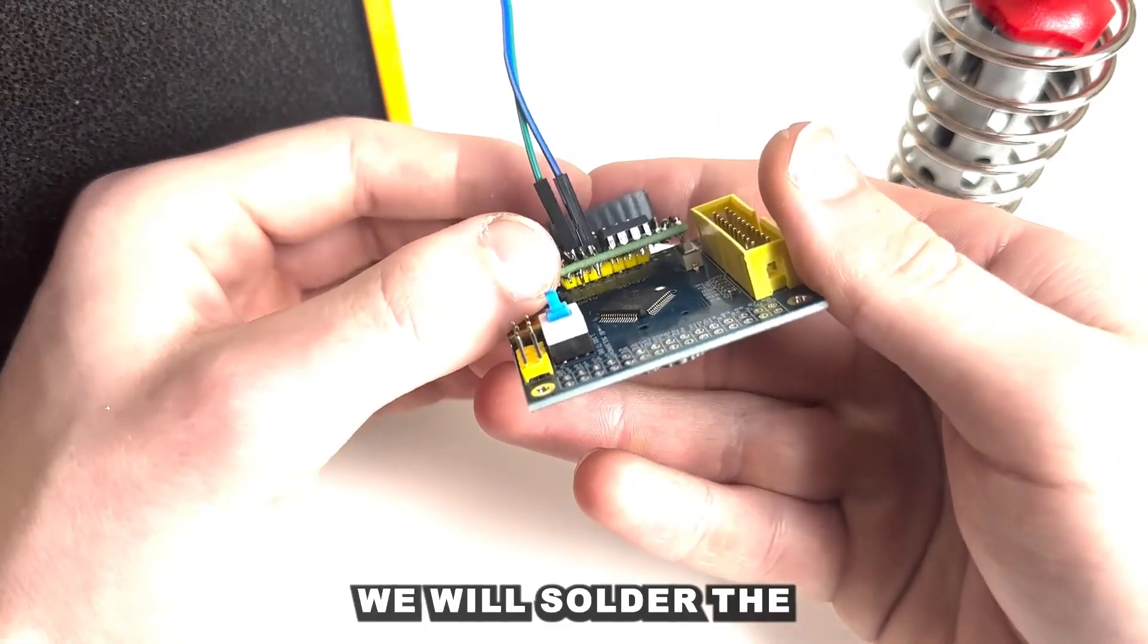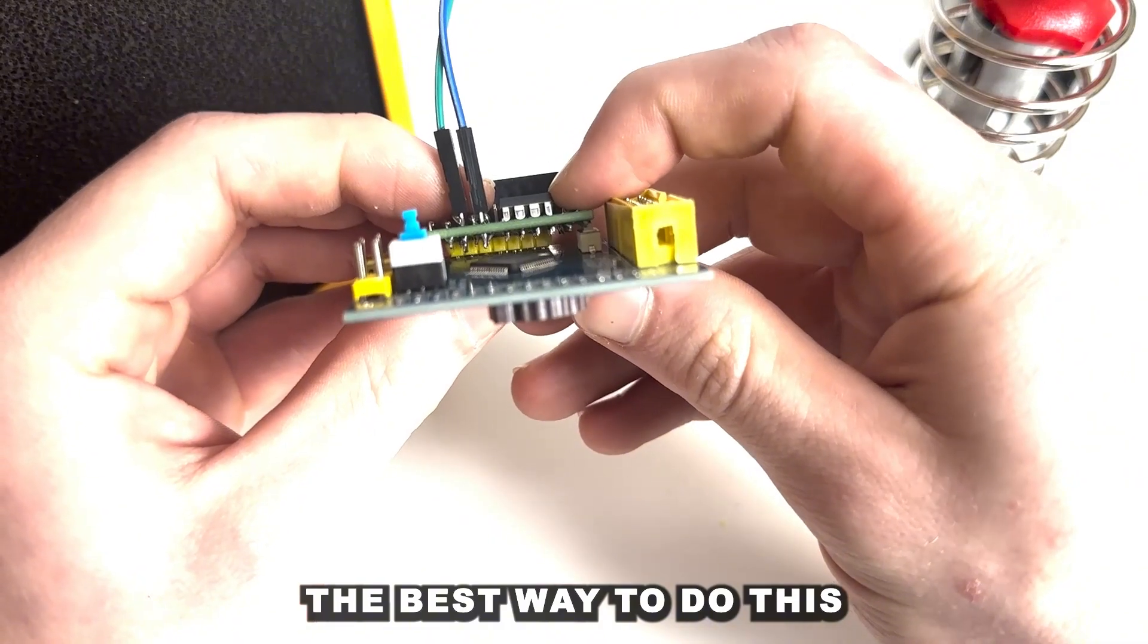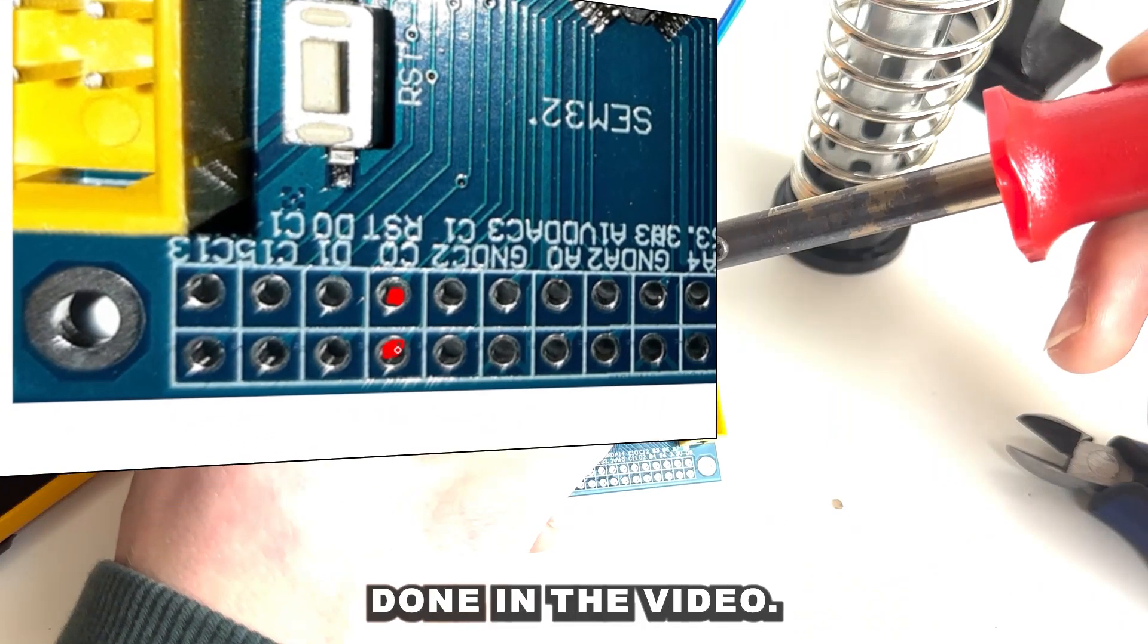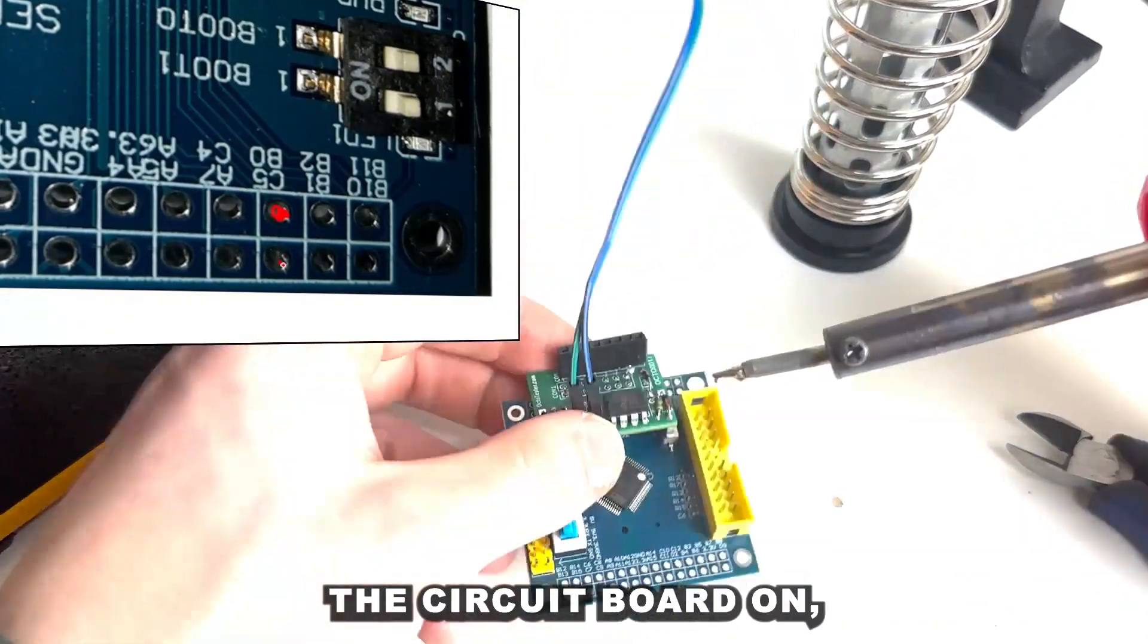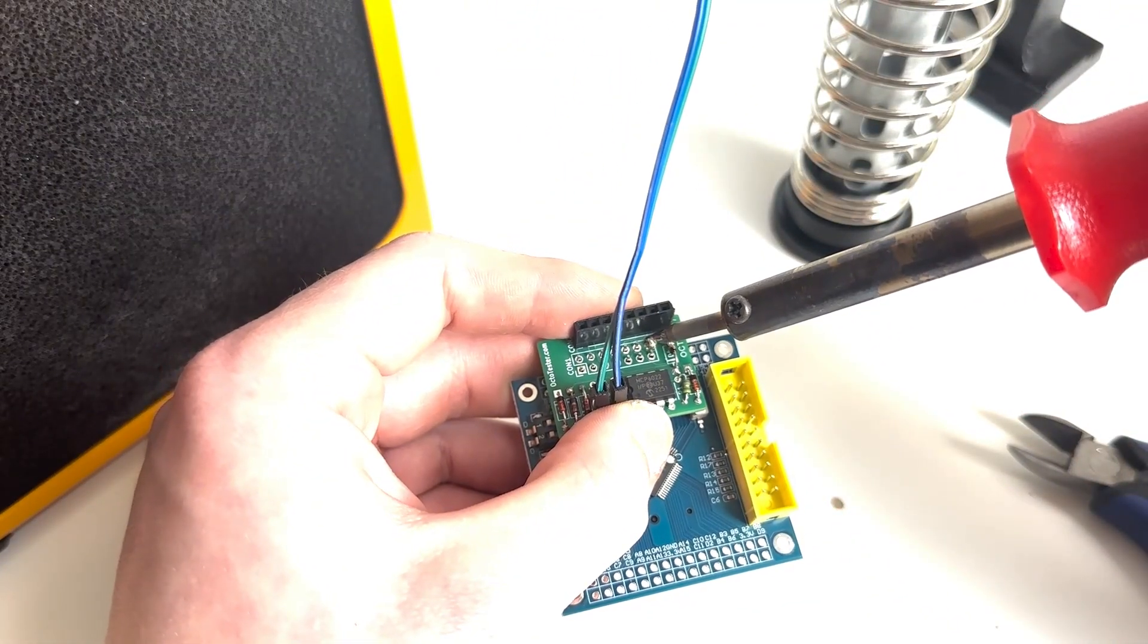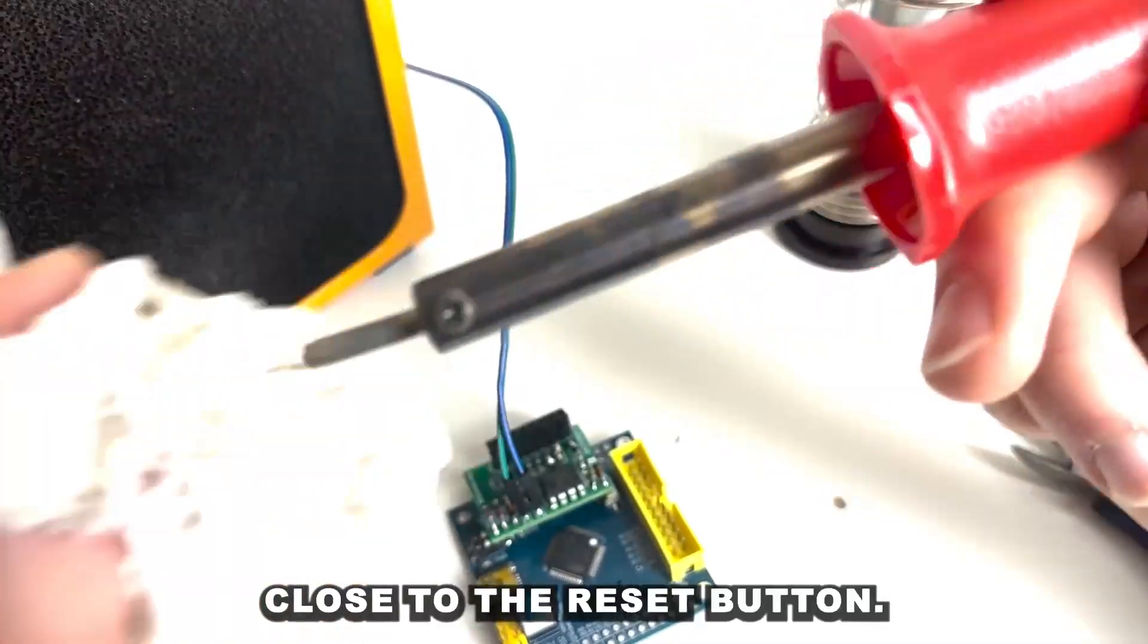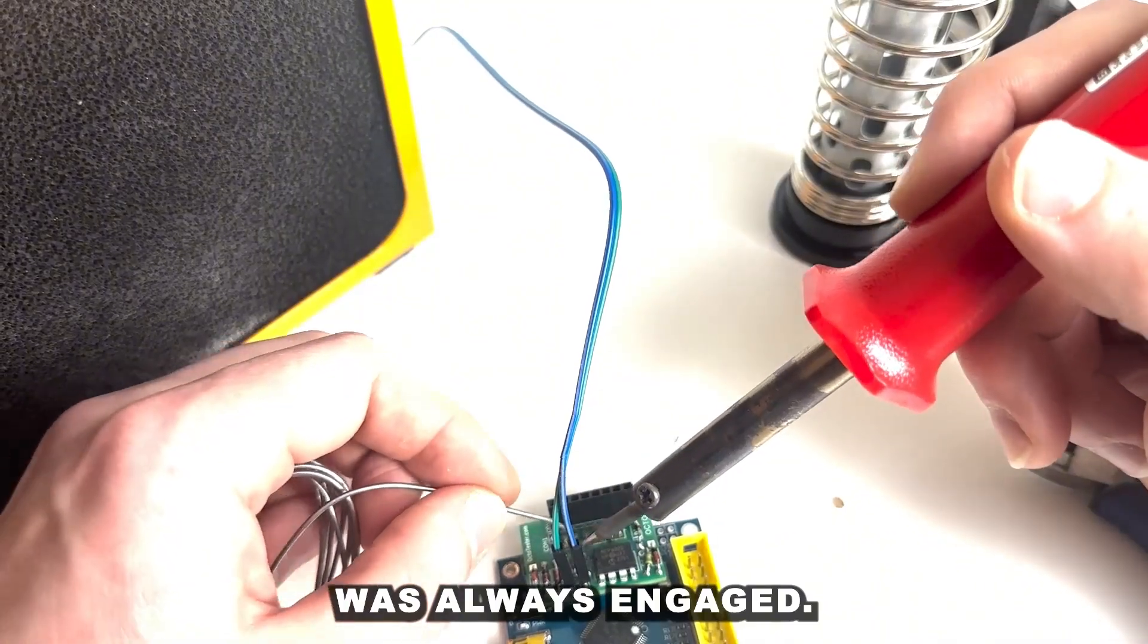After this we will solder the circuit board onto the microcontroller. The best way to do this is to cut yourself two extra yellow pins and place them on each end of the circuit board which I haven't done in the video but this ensures that when you solder the circuit board on it's on nice and evenly. One mistake I had done in the past is I actually soldered the circuit board on too close to the reset button which meant that the reset button was always engaged so the program could never start.